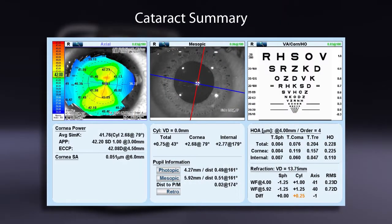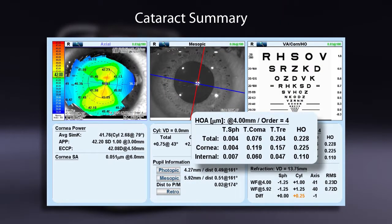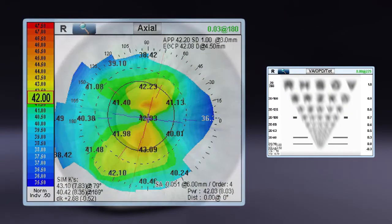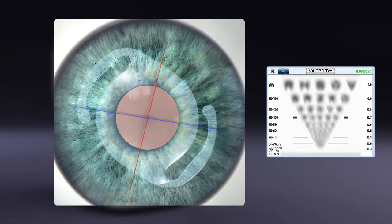Cataract summary displays any high-order aberrations that may remain after the cataract is extracted. Map view shows pre-op measurement with the ability to display the post-op measurements showing the correction along with the markings of the toric IOL in the retroillumination image.